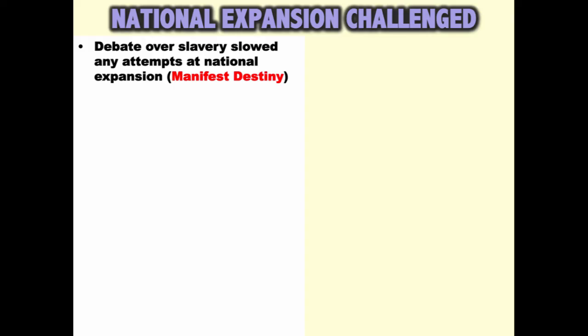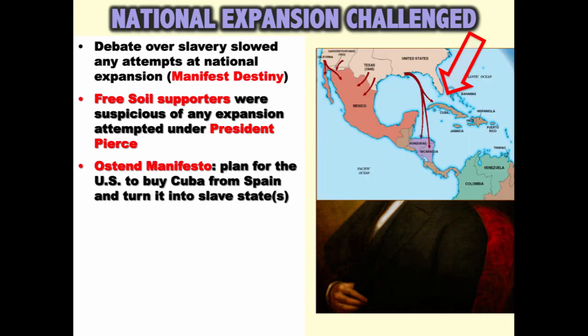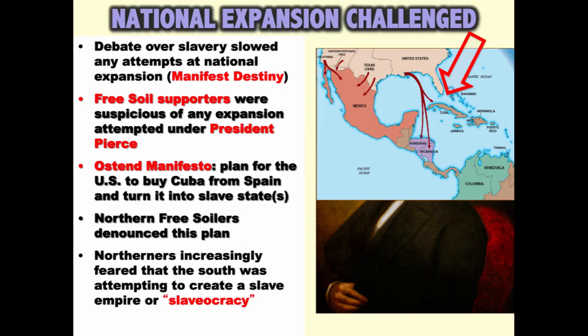As a result of all this tension, national expansion itself was challenged. The debate over slavery slowed any attempts at manifest destiny, which Northerners and Southerners had held onto. Free soil supporters were suspicious of any expansion under President Pierce. For instance, the Ostend Manifesto was a plan for the US to buy Cuba from Spain and turn it into a slave state or states. This plan by Southerners was flatly rejected by the North, and Northerners increasingly feared that the South was attempting to create a slave empire — a slaveocracy — so they were pumping the brakes on any expansion.